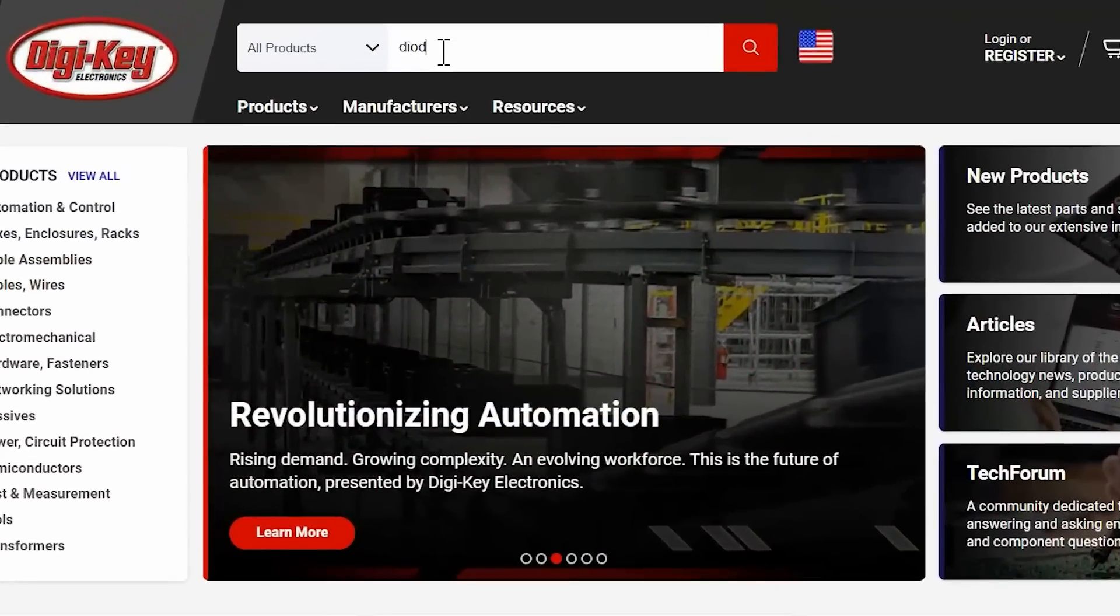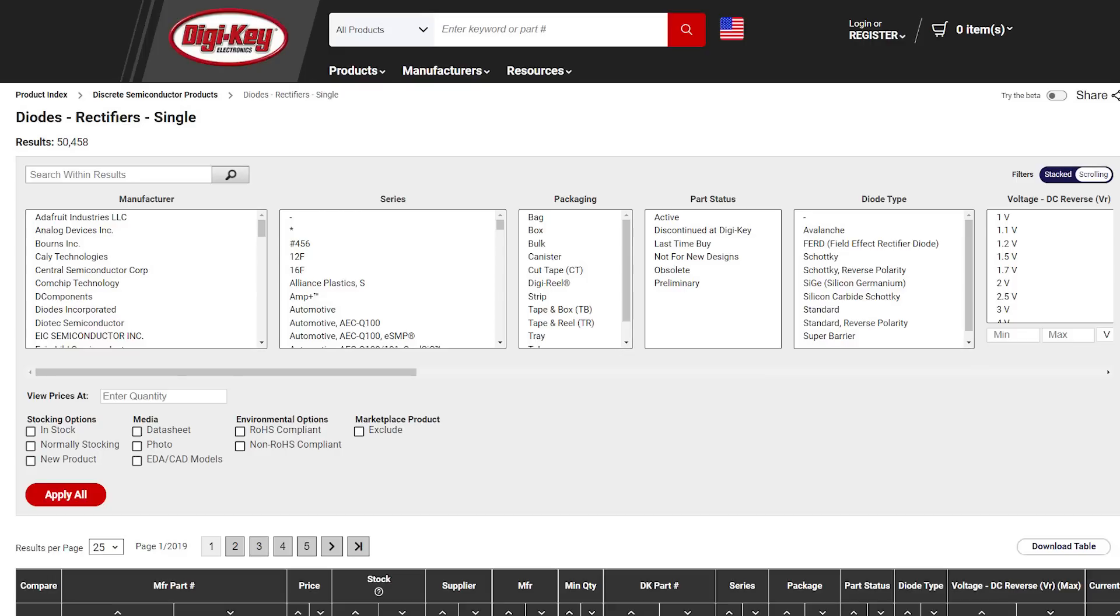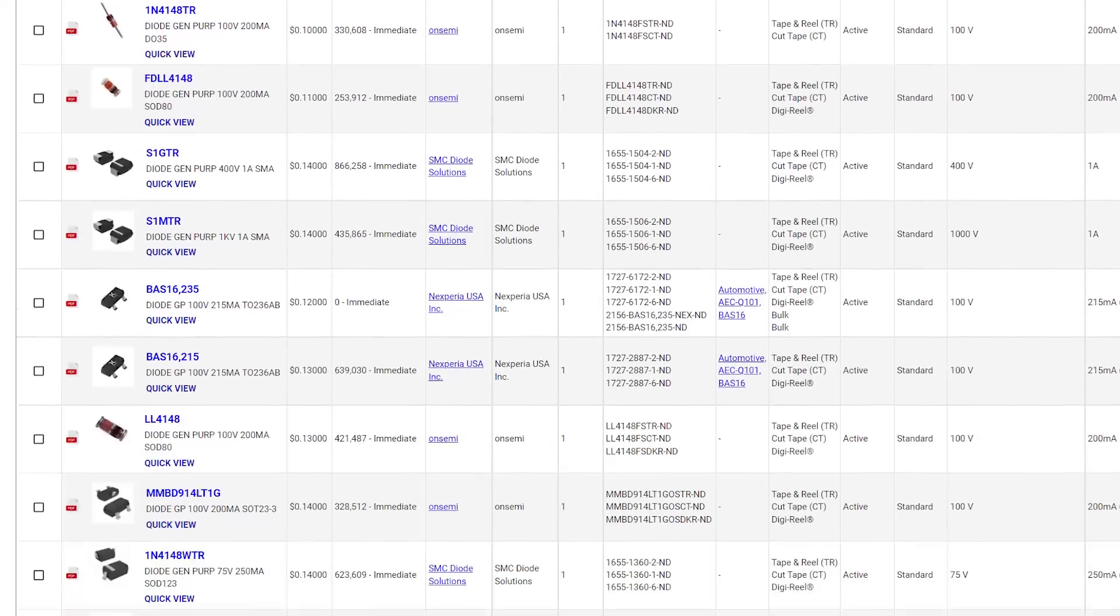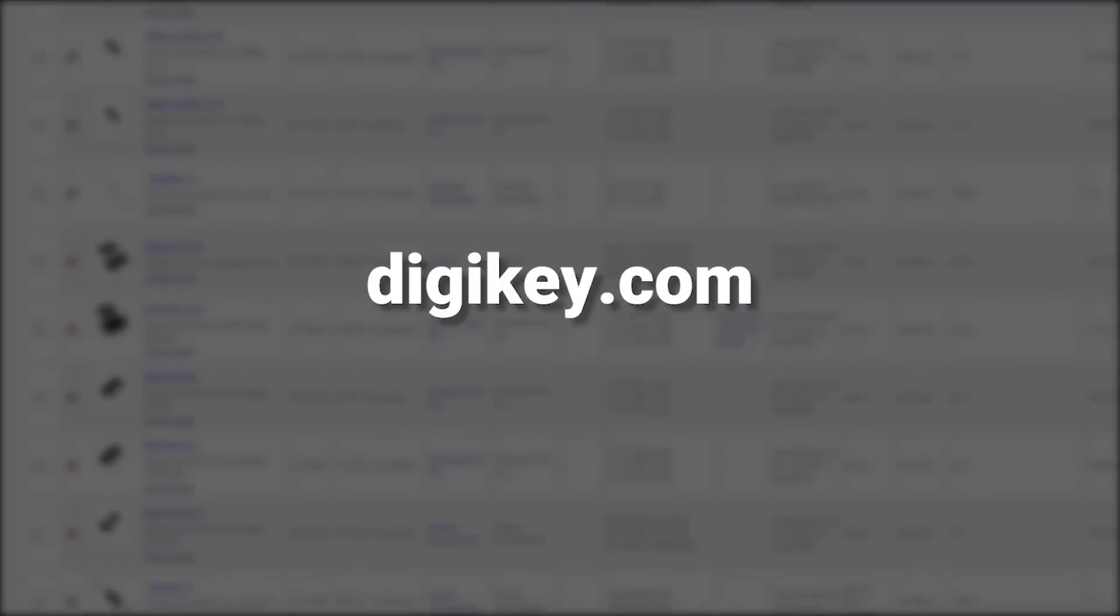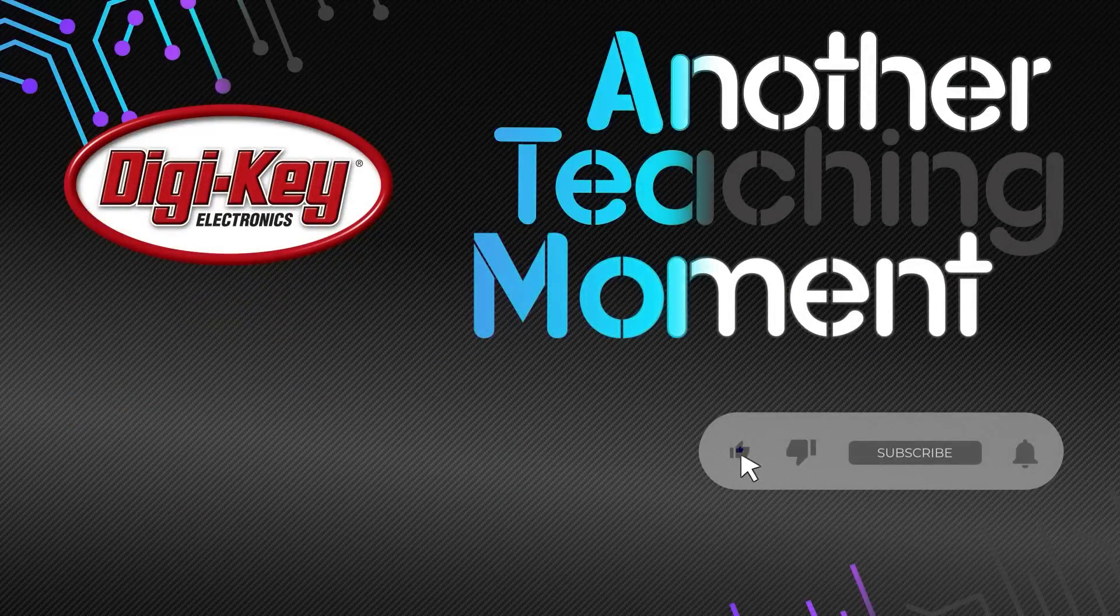Diodes are a vital component in the electronics industry. With the diverse variety available, they create robust solutions for many applications. Find all the types discussed here and more at DigiKey.com. Want to watch more videos like this? Like and subscribe!